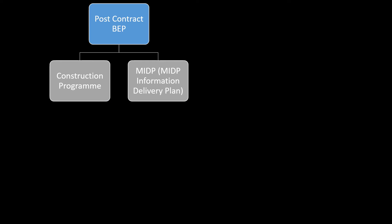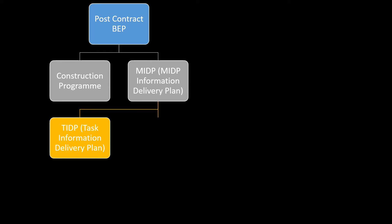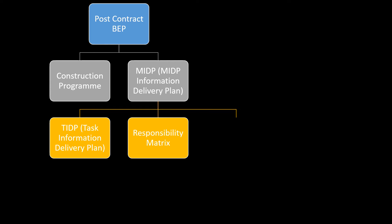Using a chart: the post-contract BEP contains two things — the Construction Program and the Master Information Delivery Plan. We've discussed the construction program, so now we move on to the MIDP. The MIDP contains three things. First is the TIDP, which stands for Task Information Delivery Plan. As the name suggests, it states how the task will be completed, who the personnel involved will be, and what their responsibilities are.